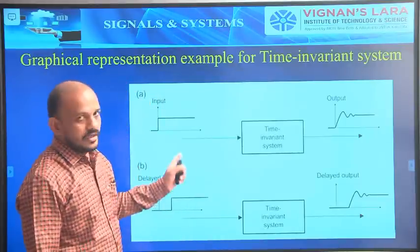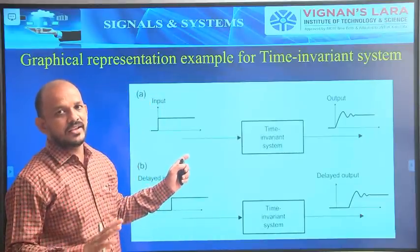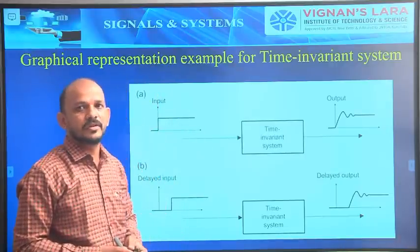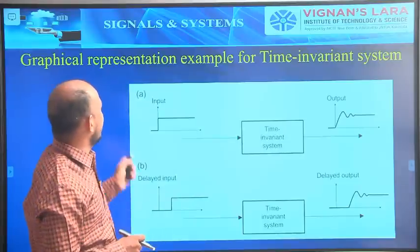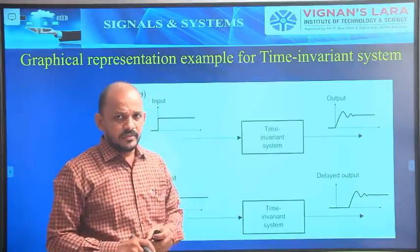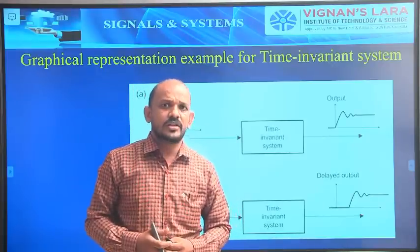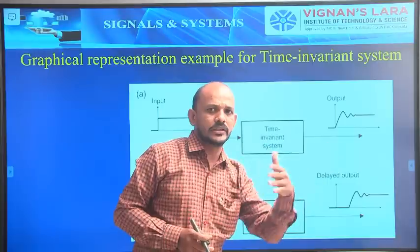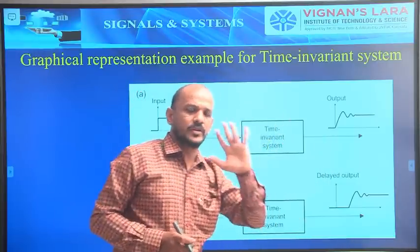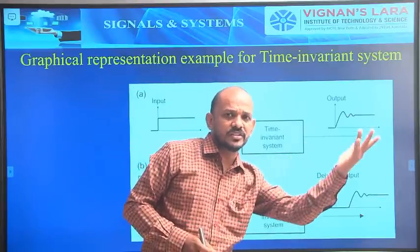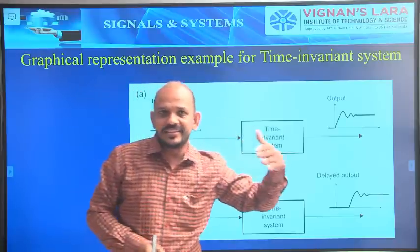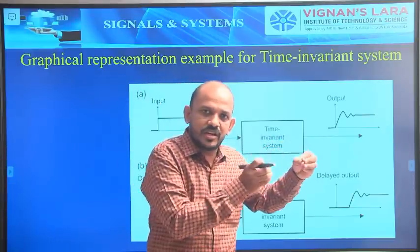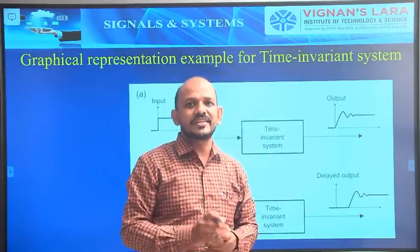For a graphical representation example of a time invariant system: the delay in the input results in a corresponding delay in the output. The change in the input results in the corresponding change in the output. The same amount of change that occurs at the input has to occur at the output.